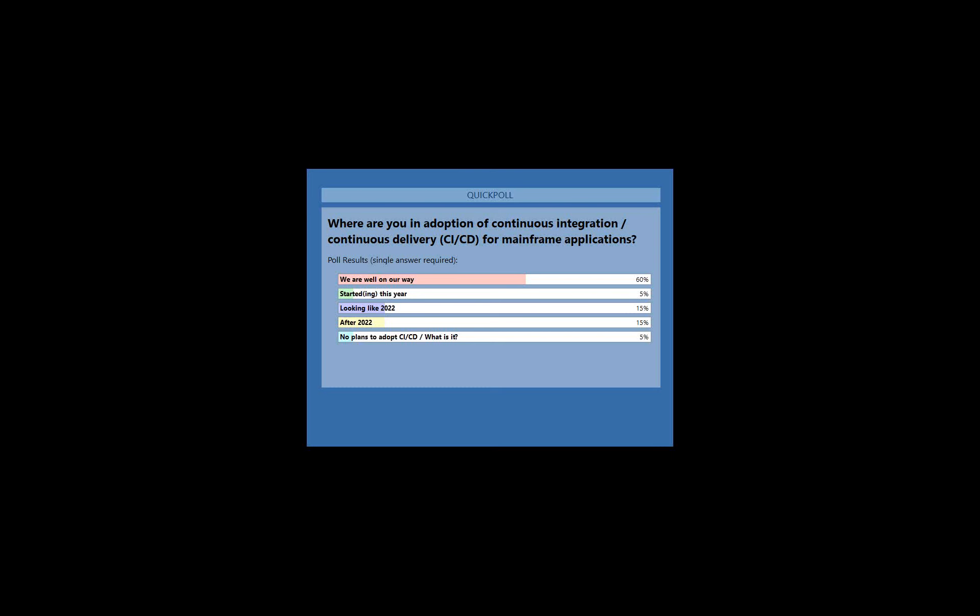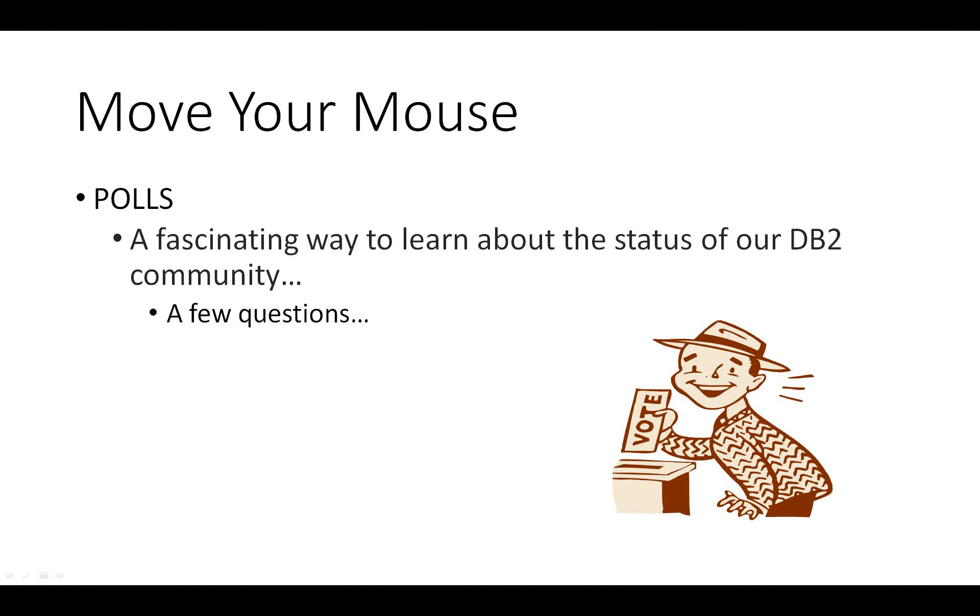The final pre-show poll asks about adoption of continuous availability. About 80% voted, with 60% reporting they are well underway. Martin notes this is a big improvement compared to when the question was last asked in fall 2019. The last poll — 'Did you learn something?' — will be asked at the end.